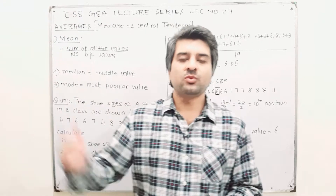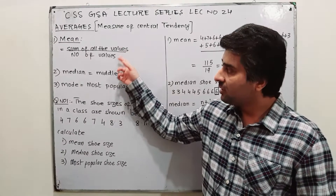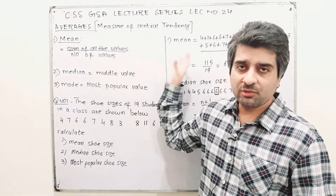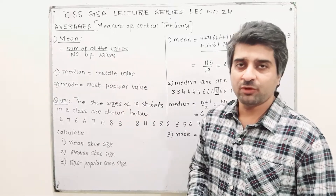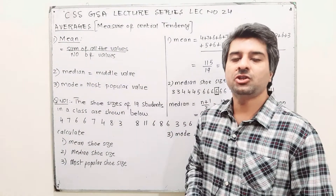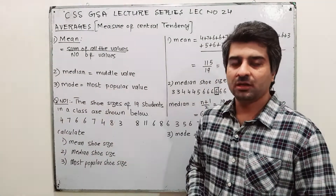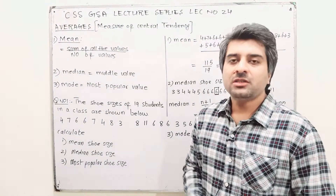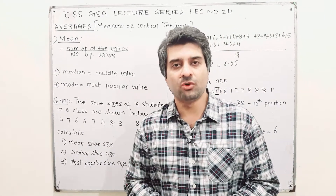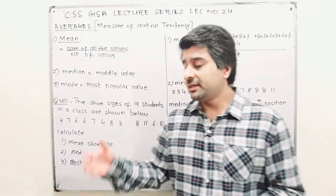Mean is the sum of all the values divided by the number of values. Median is the middle value. Mode is the most frequently occurring value — the most popular value.